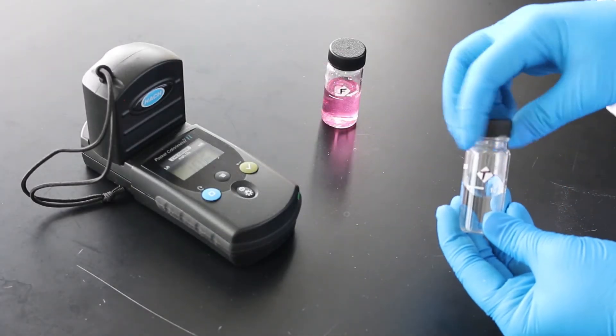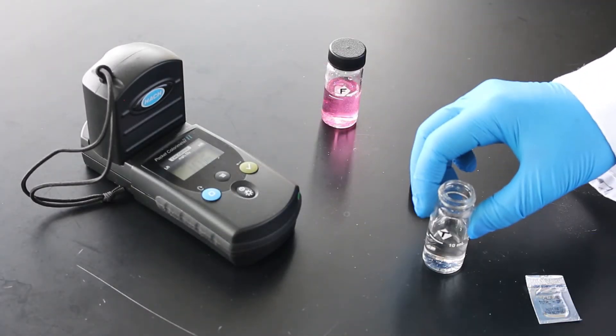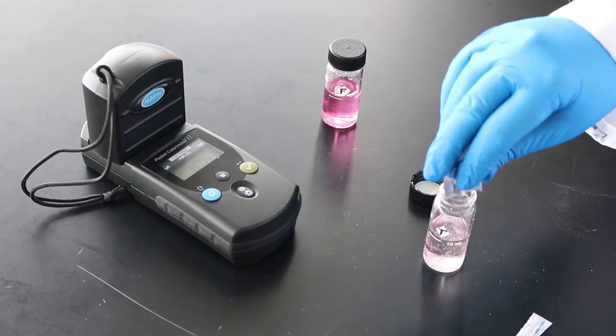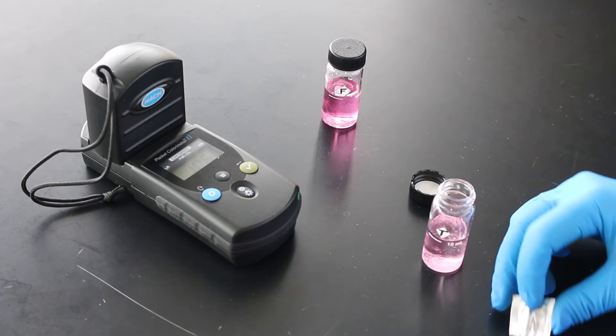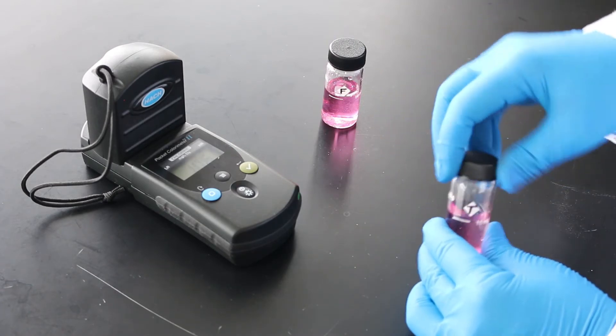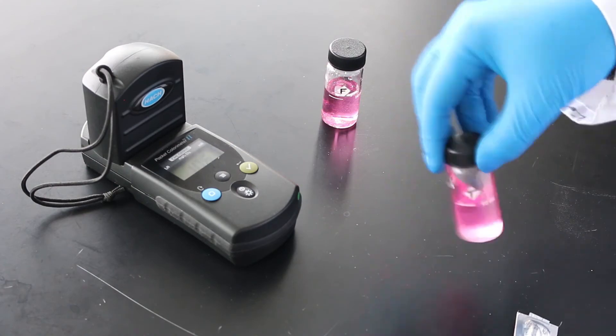It is important to note that if free and total chlorine are both being analyzed by an operator, different, dedicated cells should be used for each method. This is because trace DPD reagent can be carried over and will interfere with your residual chlorine readings.